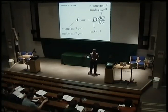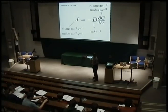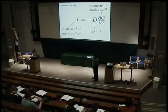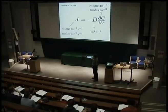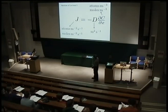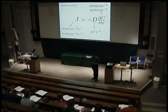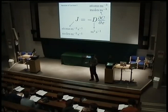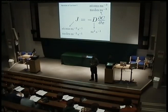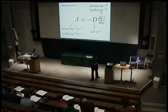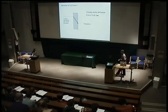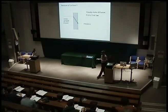I'm revising what we did in the first lecture. This is Fick's first law of diffusion. You should be consistent in the units you use. If the flux is in atoms per meter squared per second, then the concentration should also be in atoms per meter cubed. The units of the diffusion coefficient can then be derived as meter squared per second. That's Fick's first law of diffusion. It applies to scenarios where we have steady-state fluxes.